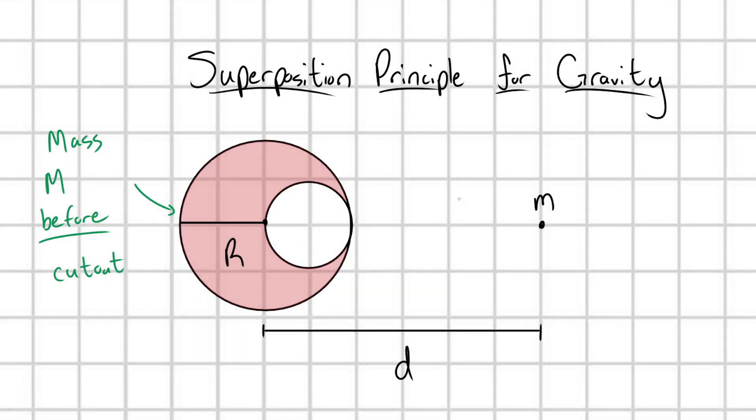Hello there. In this video, we're going to learn about the superposition principle for gravity through a simple example. In this problem, I have a planet with a cutout on the right end of the planet. It's this spherical cutout with a diameter equal to the radius of our planet.